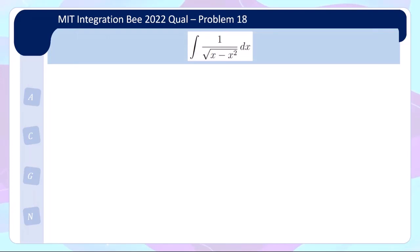Let us take a look at question 18. This is another classic substitution problem. First, write the integral with √x pulled out. Now √x and √(1−x) look quite different, which is the annoying part. To introduce symmetry, let x = 1/2 + y, so dx = dy. Substituting: √x becomes √(1/2 + y) and the other term becomes √(1/2 − y).